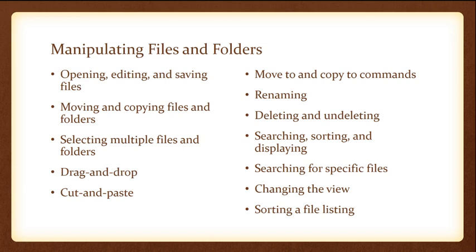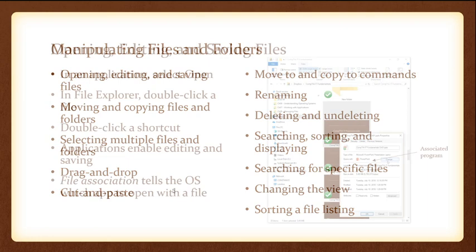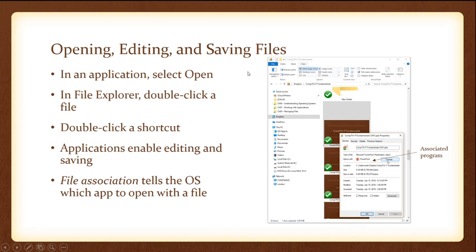The next section is how you can manipulate files and folders: opening, editing, and saving files; moving and copying folders; selecting multiple files; drag and drop or cut and paste; renaming, deleting, undeleting, and more. You can open a file in three ways: select open, double-click on a file, or double-click a shortcut. The best way to save a file is either click File > Save, or use the hotkey Control S.